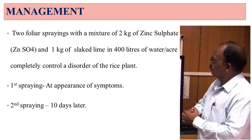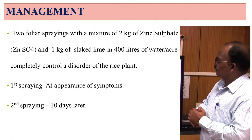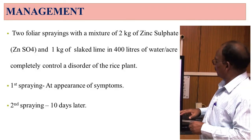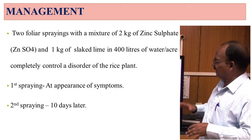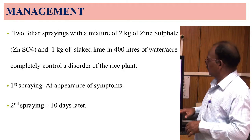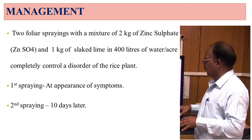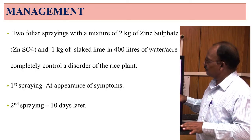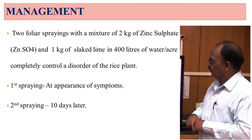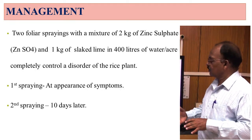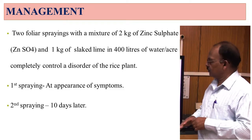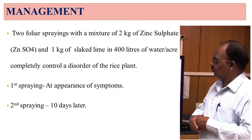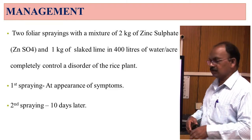For management, two foliar sprays with a mixture of 2 kg of zinc sulphate and 1 kg of slaked lime in 400 litres of water per acre completely control this disease. The first spraying should be given at the appearance of symptoms, and the second spraying 10 days later.